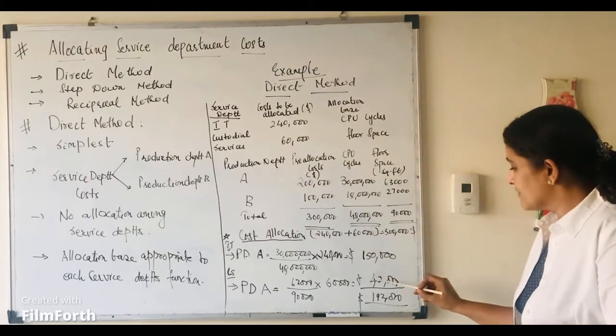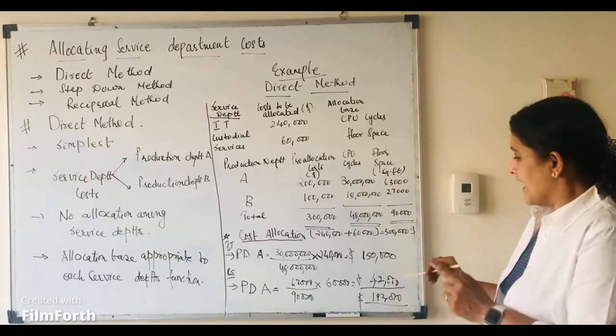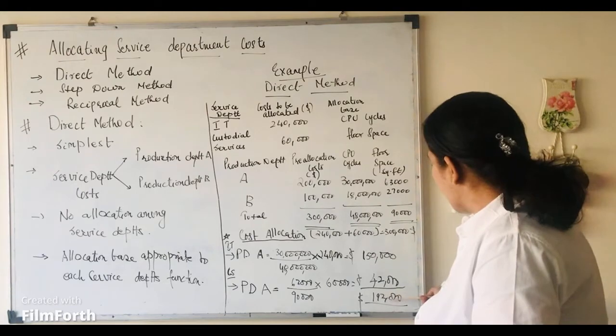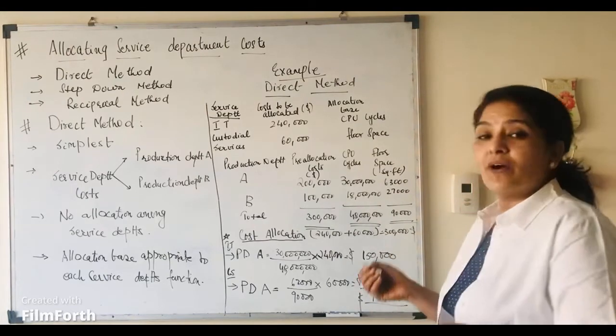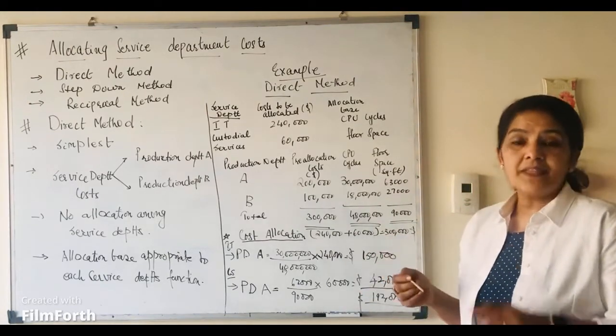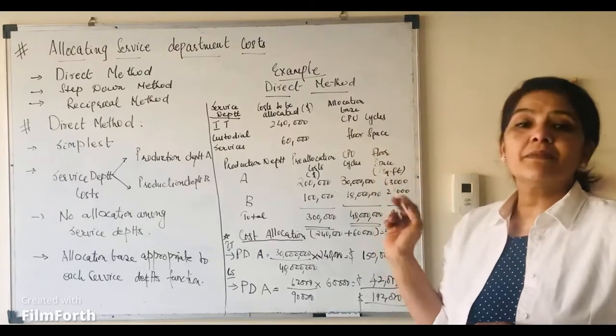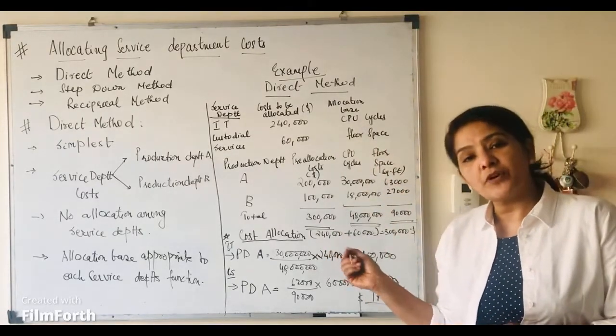So that is $42,000. And when you add up these two, we get $192,000. That is the service department cost which is being allocated to production department A.